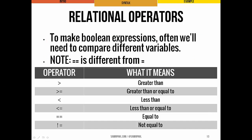We've used relational operators before, and there are a couple more: greater than, greater than or equal to, less than, less than or equal to, equal to, and not equal to. An important common mistake is using a single equal sign for equality comparison. The single equal sign is the assignment operator — it sets the first thing equal to the second thing. When you want to compare whether two things are equal and get a true or false result, you use the equality operator, which is the double equal sign.